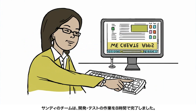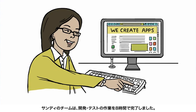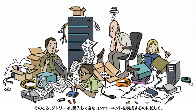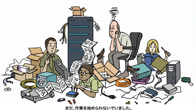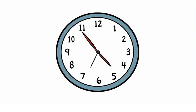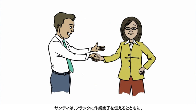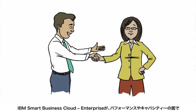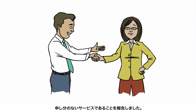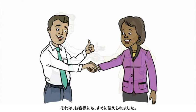Savvy Sandy's team completes development and testing in eight hours versus four weeks. Meanwhile, Doddling Dudley can't begin development until all the components he bought are put together. Savvy Sandy tells the now formerly frantic Frank her good news and how IBM Smart Business Development and Test on the IBM Cloud instantly provides the performance and capacity they need, which translates into happier customers.